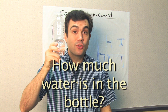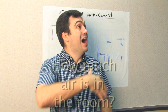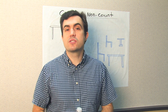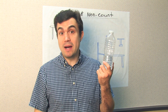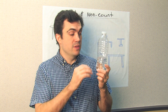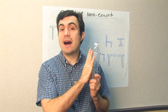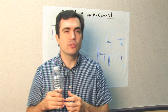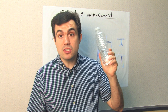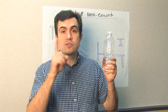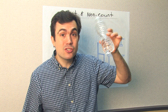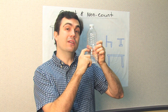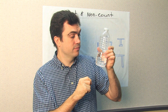How much water is in the bottle? How much air is in the room? These are things we can't count. I can count how many bottles of water there are. A unit is countable — a bottle, a milliliter, an inch. These are countable units. How many bottles of water are there? There is one. But how much water is in the bottle? There is a little. There is a little bit.